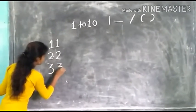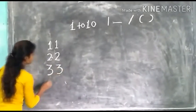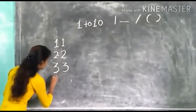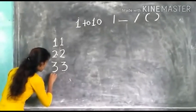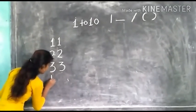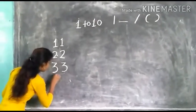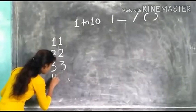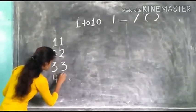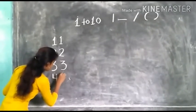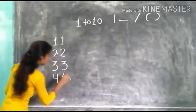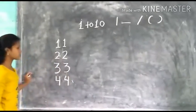Next number is 4. Standing line, sleeping line, and standing line. This number is 4.